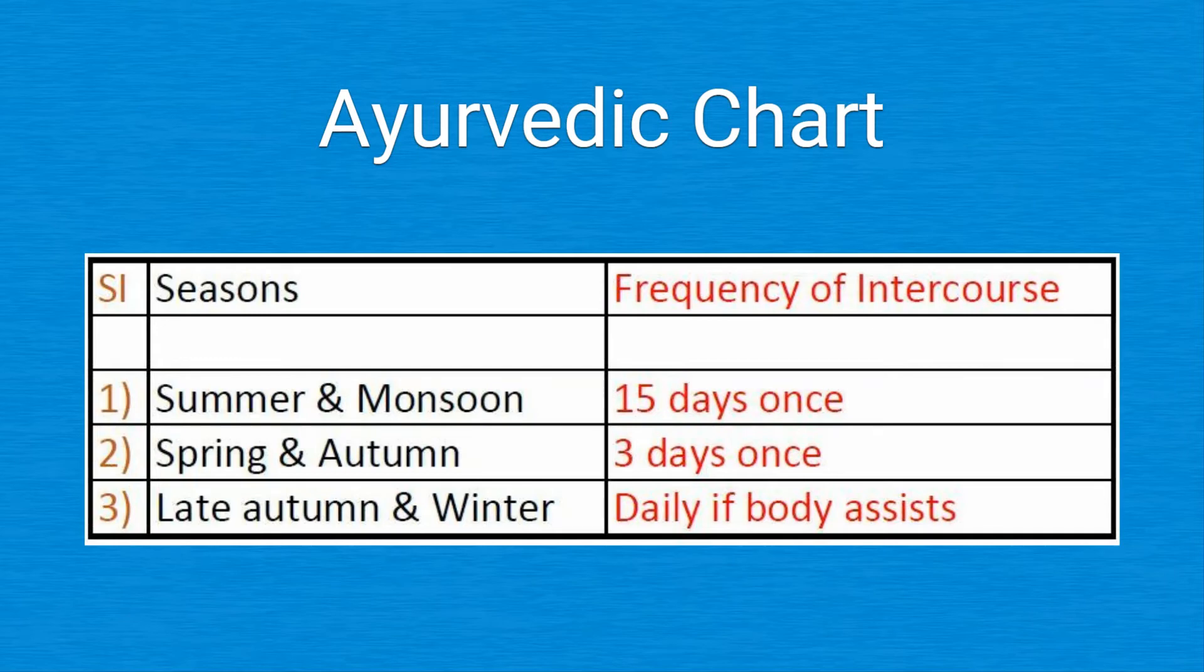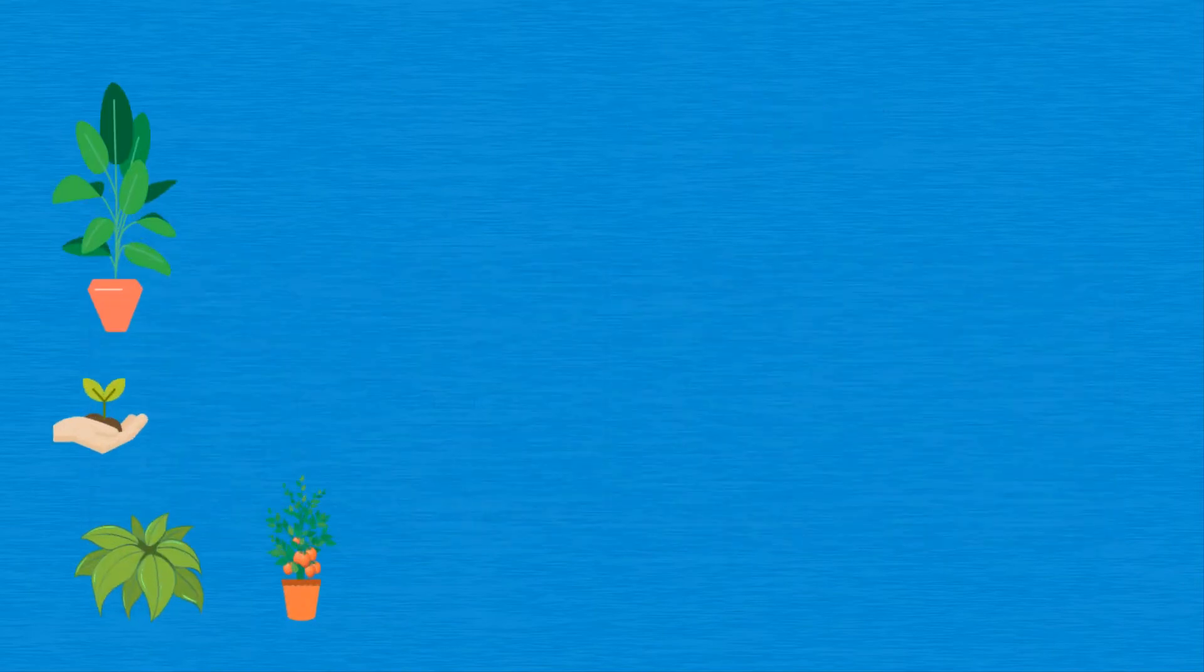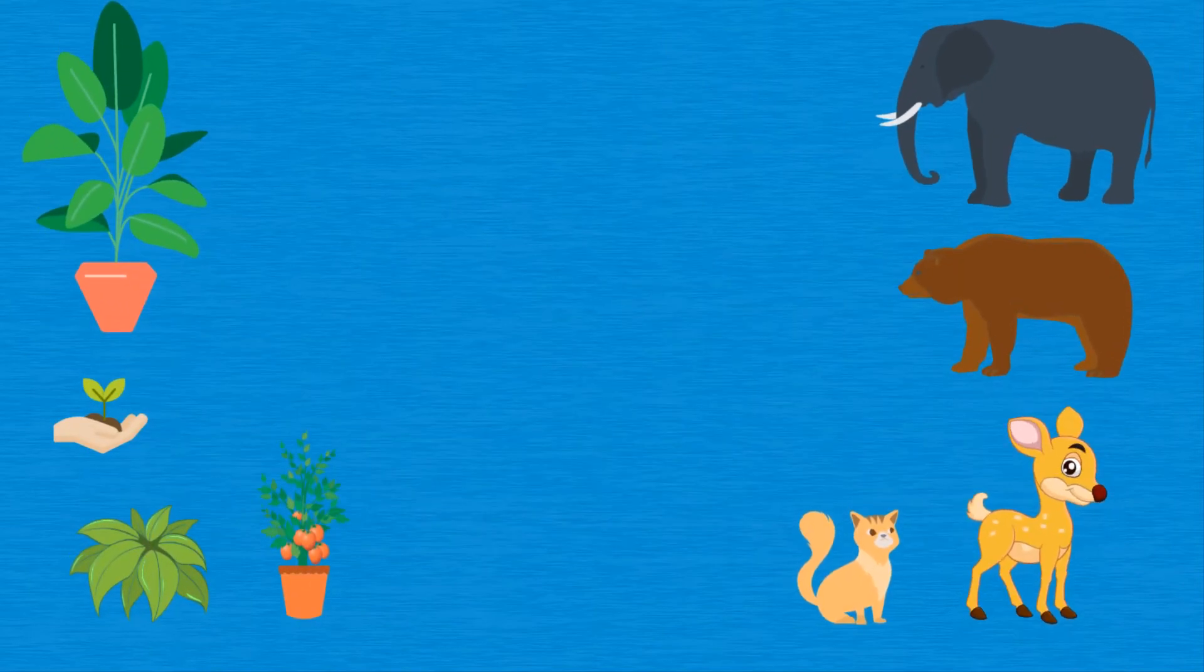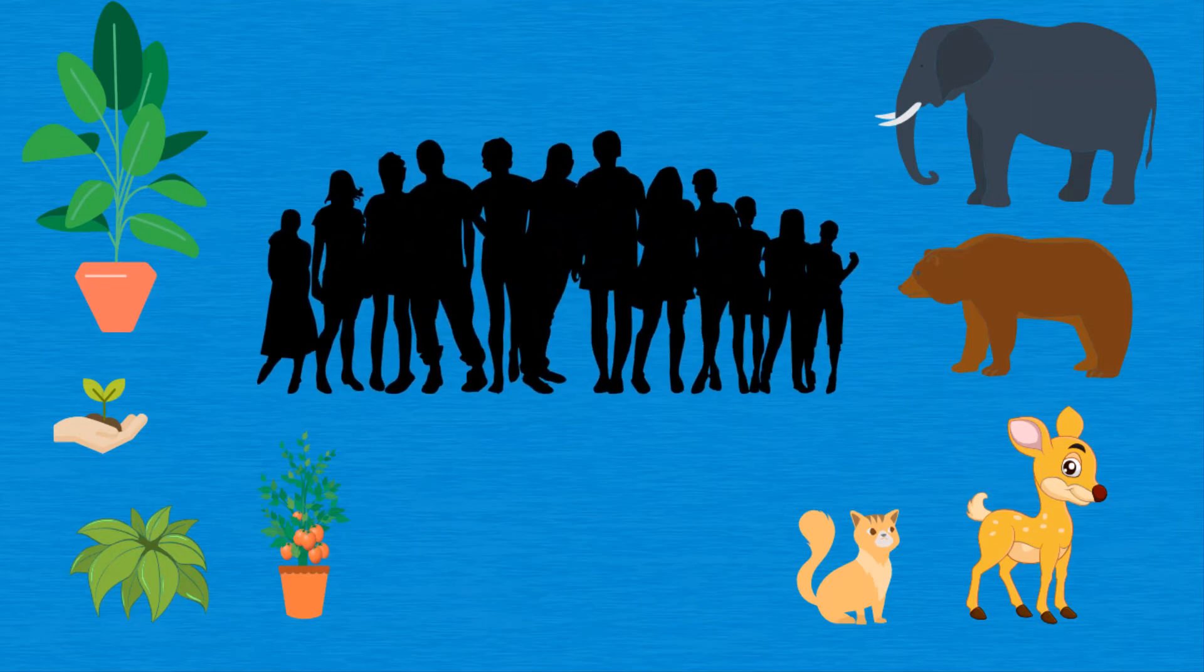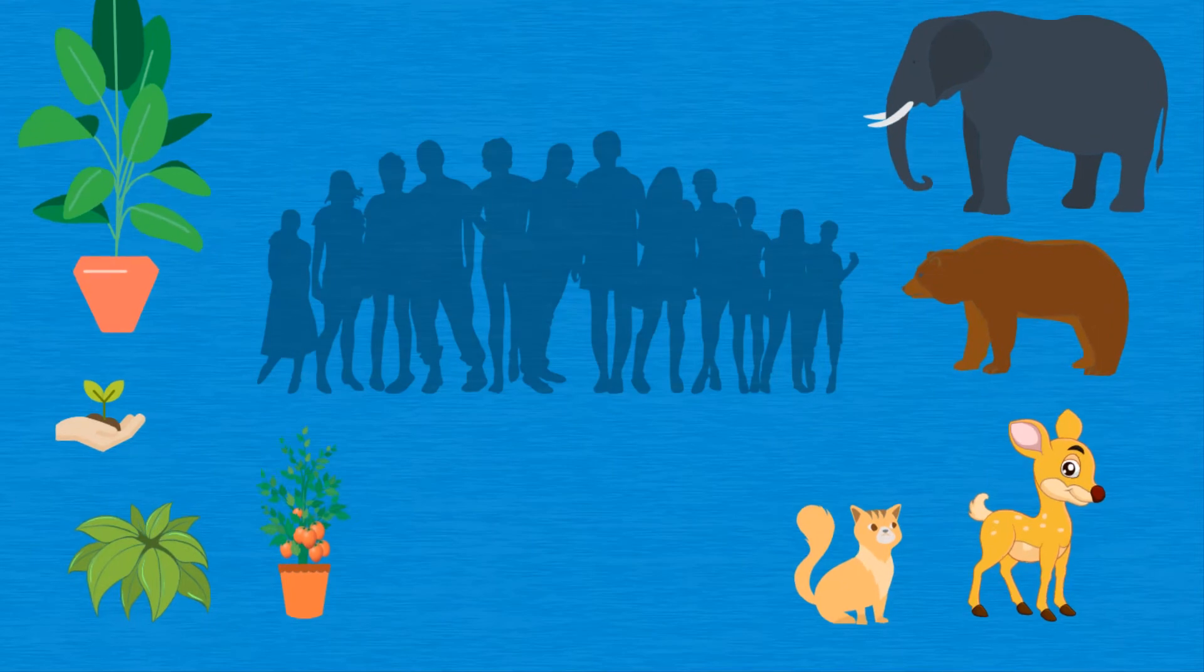In nature, there's a time and season for sexuality and time and season for rest. This is true for plants, practiced by animals, and should be practiced by humans as well. This enables the person to maintain balance without depletion.